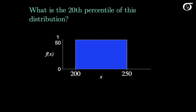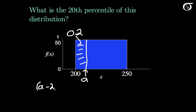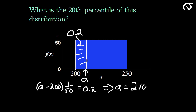What is the 20th percentile of this distribution? The 20th percentile is the value of the variable that has an area to the left of 0.2. So we need to find the value A such that the area to the left is 0.2. We know this rectangle has an area of 0.2, equal to base times height: (A minus 200) times 1 over 50 equals 0.2. Solving for A by multiplying by 50 and adding 200, we get A equal to 210. So the 20th percentile of this distribution is 210.